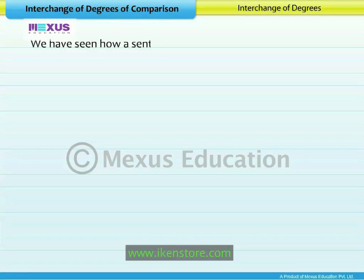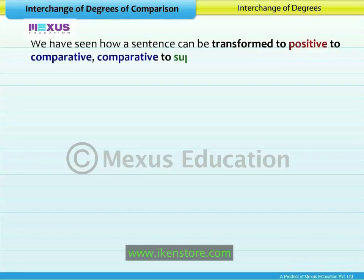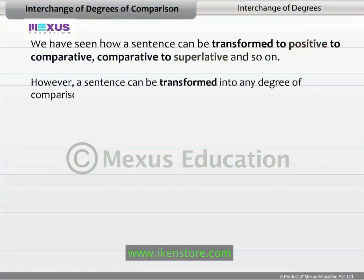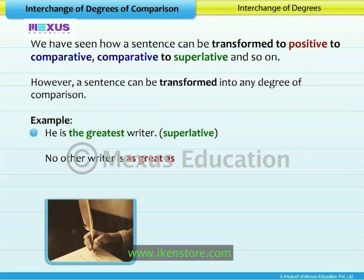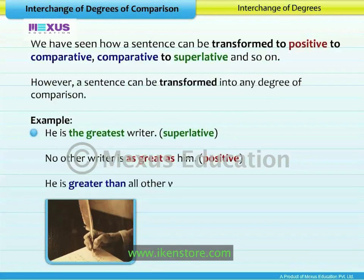We have seen how a sentence can be transformed to positive, to comparative, to superlative, and so on. However, a sentence can be transformed into any degree of comparison. For example: He is the greatest writer — this sentence is in the superlative degree. It can be transformed into positive: No other writer is as great as him. This sentence can also be written in the comparative degree: He is greater than all other writers.